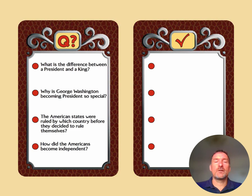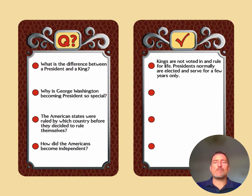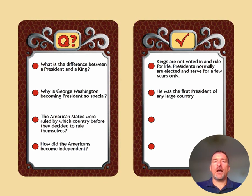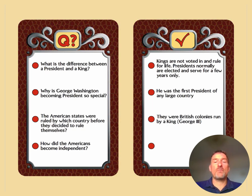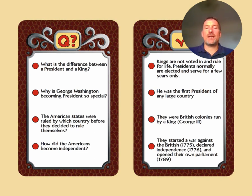Here are some questions about George Washington. What is the difference between a president and a king? Kings are not voted in and rule for life; presidents are normally elected and serve for just a few years. Why is George Washington becoming president such a special event? He was the first president of any large country in the world — quite a turning point in history. The American states were ruled by which country before they decided to rule themselves? They were British colonies run by King George III. How did the Americans become independent? They started a war against the British in 1775, declared independence in 1776, and opened their own parliament in 1789.